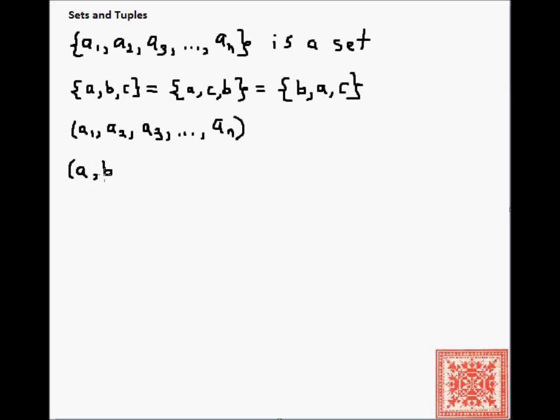The order of elements in a tuple does matter. They can be thought of as arrays in any programming language. For example, the 3-tuple a, b, c is not equal to the tuple b, c, a, and it's not equal to the tuple c, a, b.